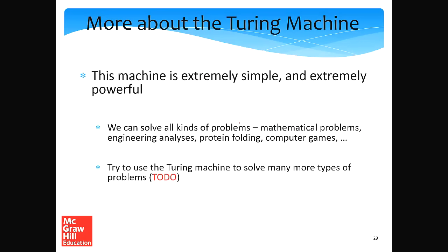This machine looks simple, and it actually is simple — yet it is extremely powerful. We can solve all kinds of problems: mathematical problems, engineering problems, protein folding, games. To understand more, start by reading the book and then a book on formal languages or automata theory. You can try using the Turing machine to solve many more kinds of problems.